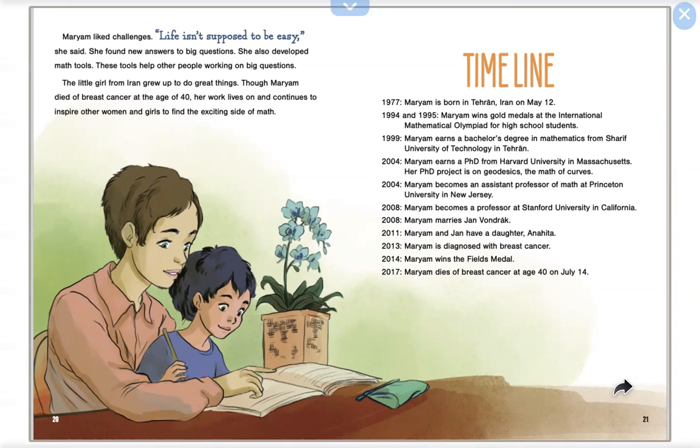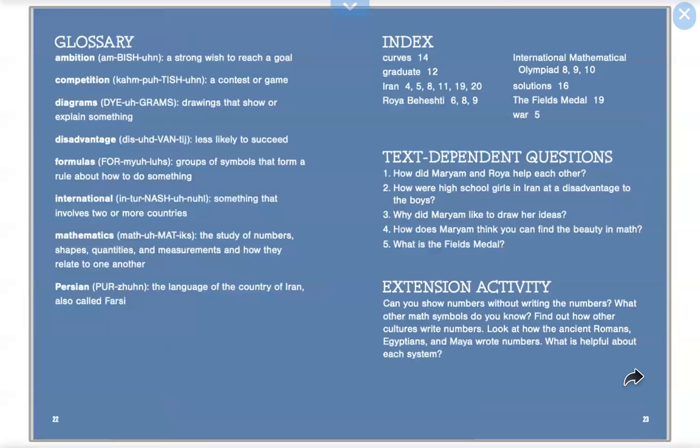Glossary. Ambition: a strong wish to reach a goal. Competition: a contest or game. Diagrams: drawings that show or explain something. Disadvantage: less likely to succeed. Formulas: groups of symbols that form a rule about how to do something. International: something that involves two or more countries. Mathematics: the study of numbers, shapes, quantities, and measurements, and how they relate to one another. Persian: the language of the country of Iran, also called Farsi.